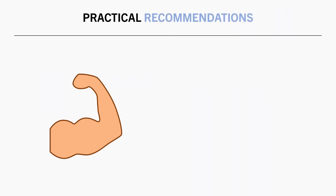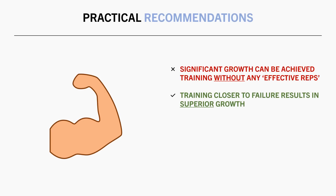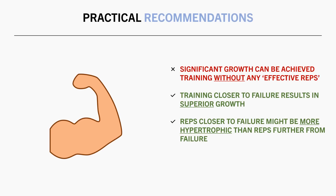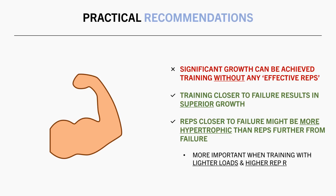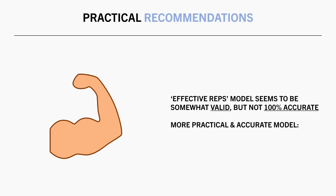So with all this information, muscle growth can be achieved without any effective reps at all, as there is plenty of evidence showing significant muscle growth without going anywhere near failure. However, training closer to failure does produce greater muscle growth, and the reps performed towards the end of a set appear to be more hypertrophic. This is more important when training with lighter loads and higher rep ranges. Overall, the effective reps model seems to have some validity but isn't entirely accurate. Rather than quantifying training using effective reps, a more practical strategy is to quantify the total number of sets performed close to failure per muscle group per week within the approximate 5-20 rep range.